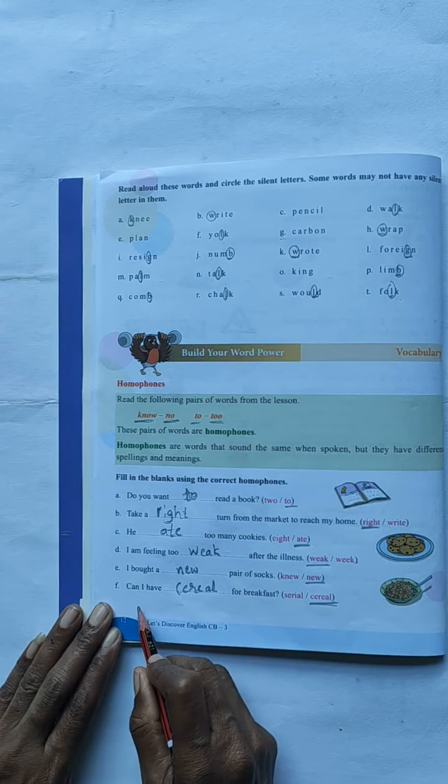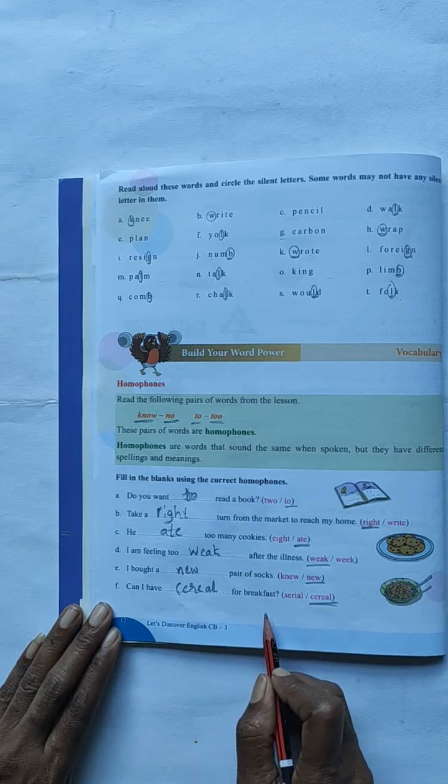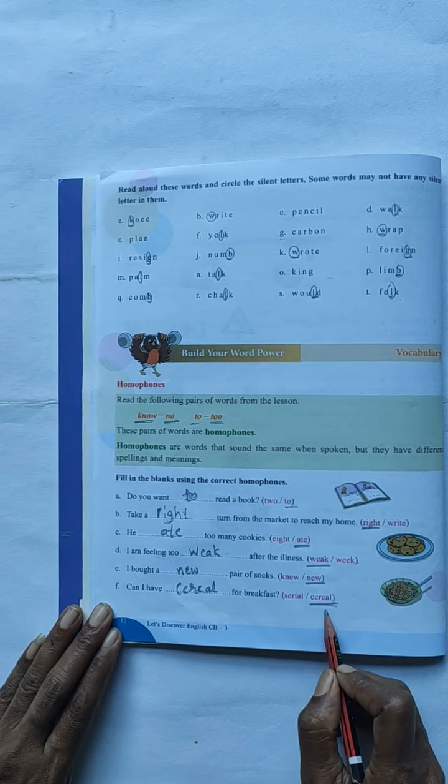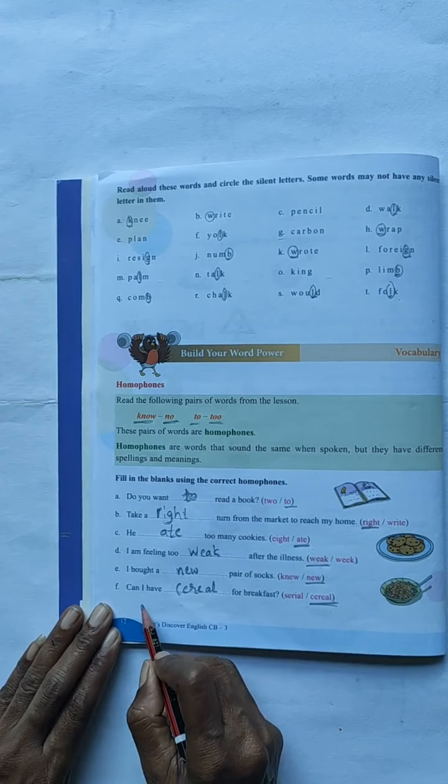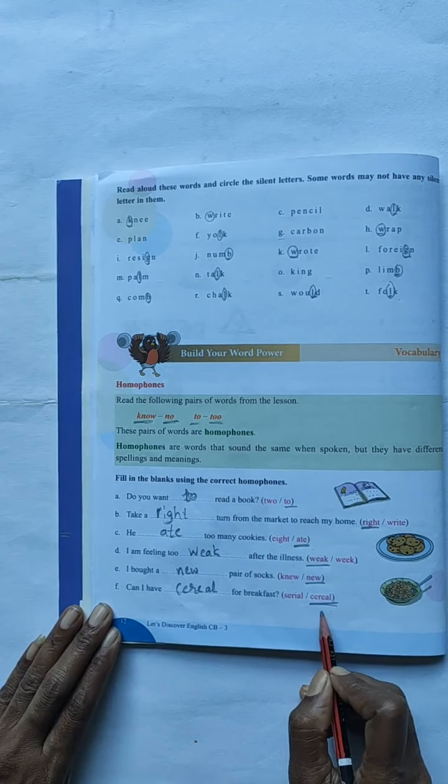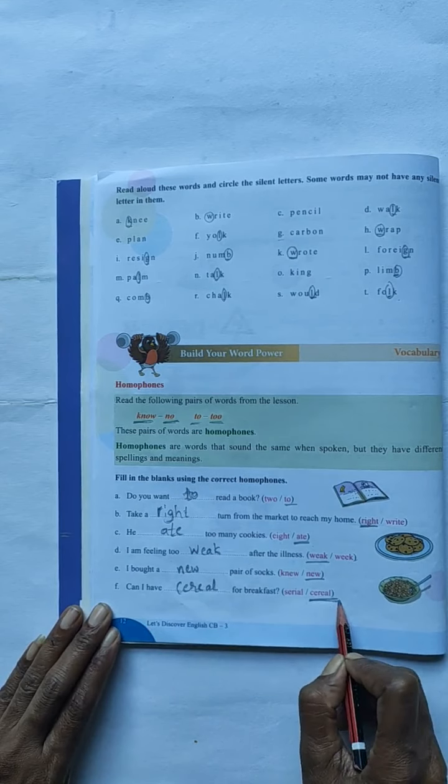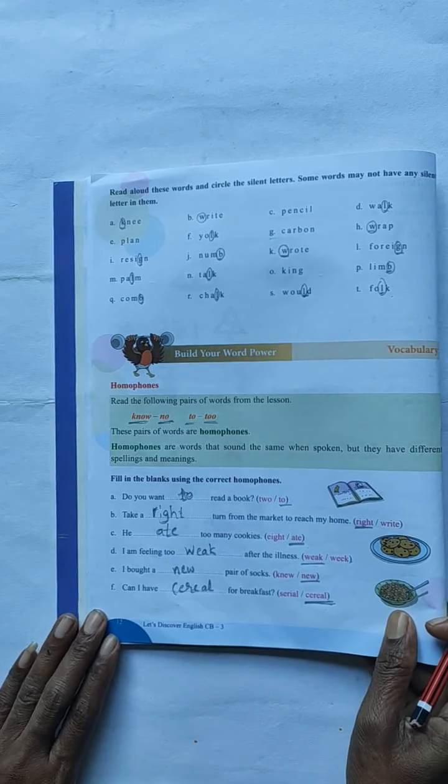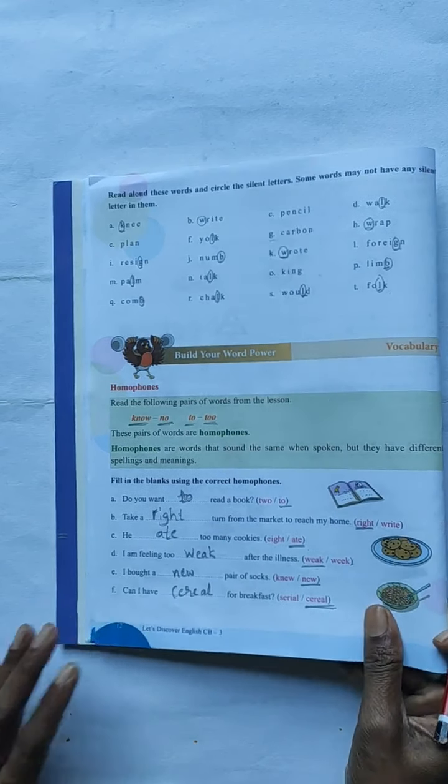The last one. Can I have dash for breakfast? S-C-R-I-A-L or C-E-R-E-A-L. Can I have cereal for breakfast? You have to write here C-E-R-E-A-L. Okay children. Afterwards you have to once again read and write this one.